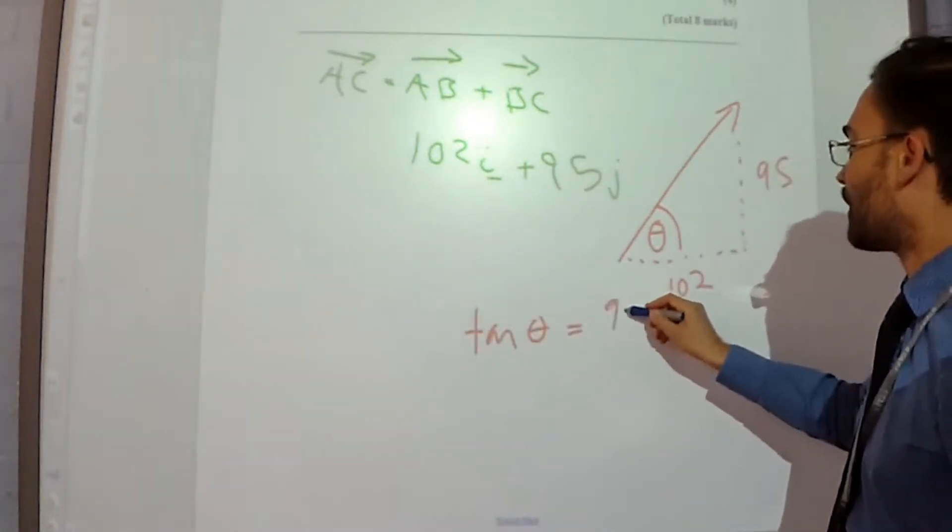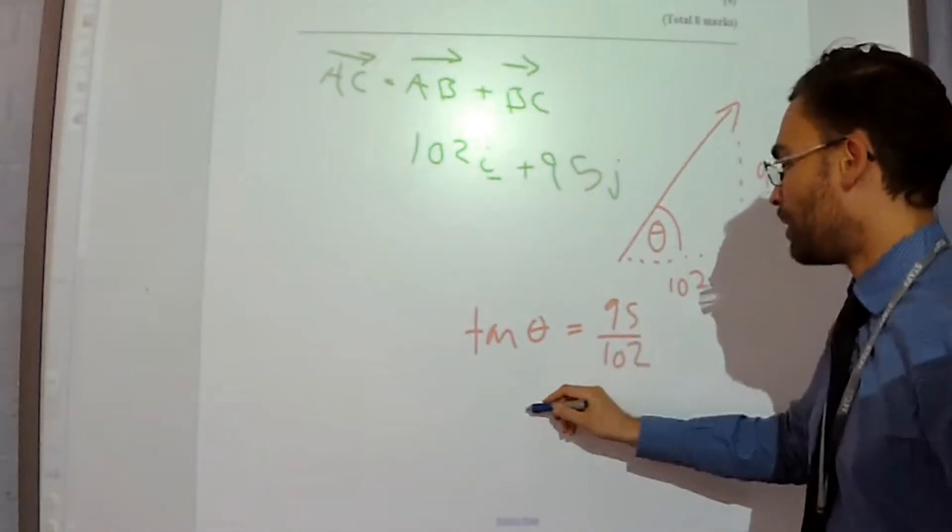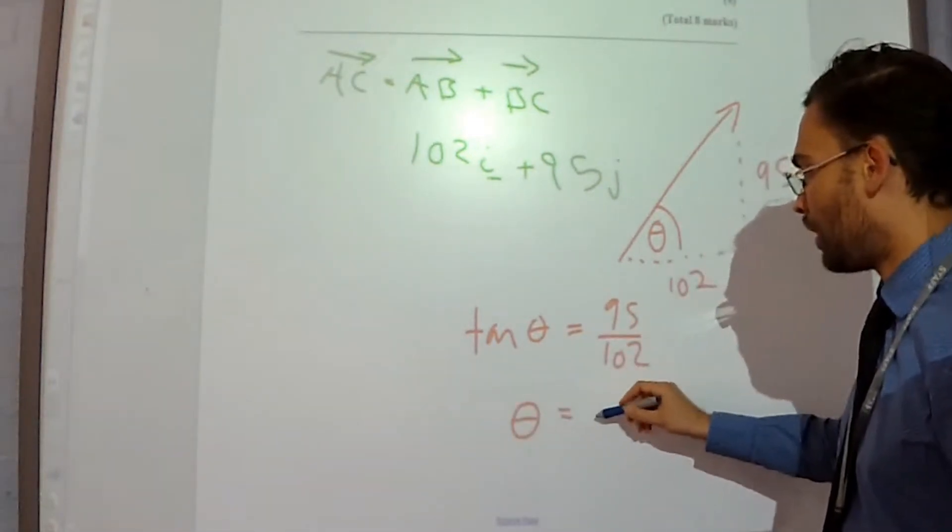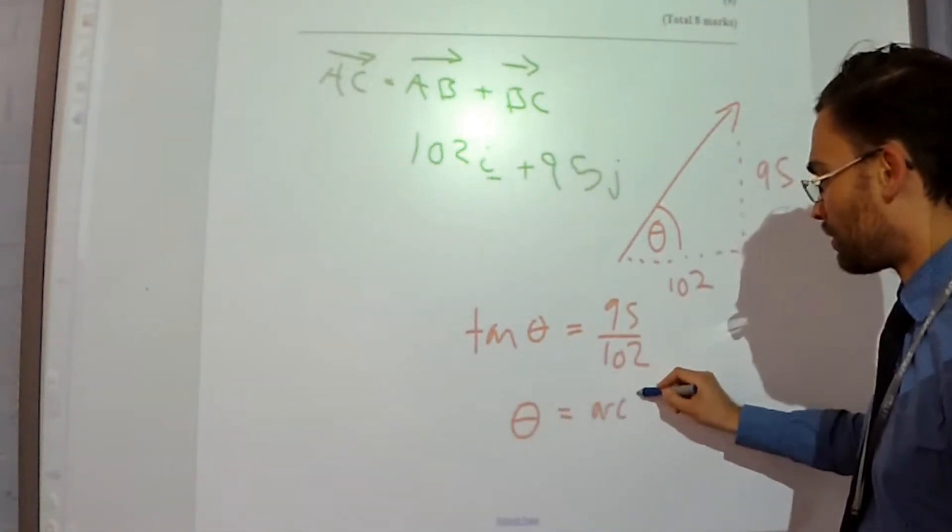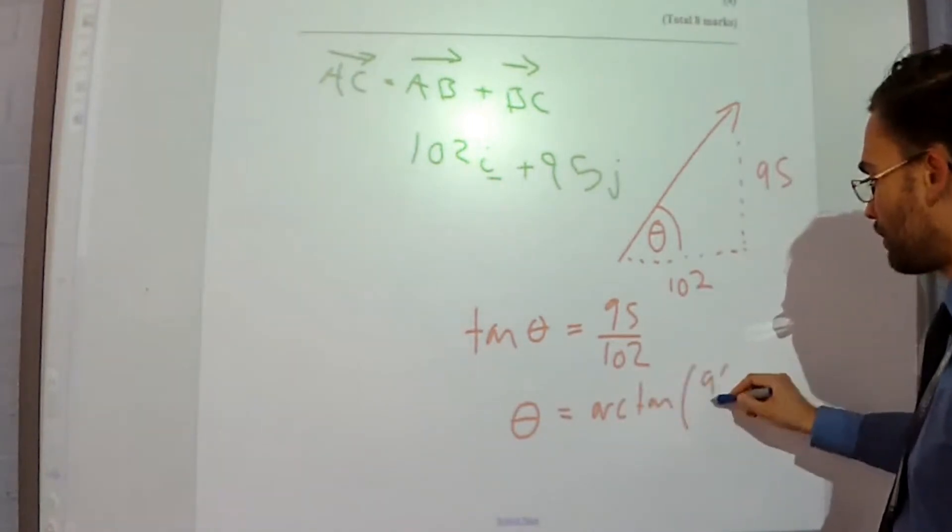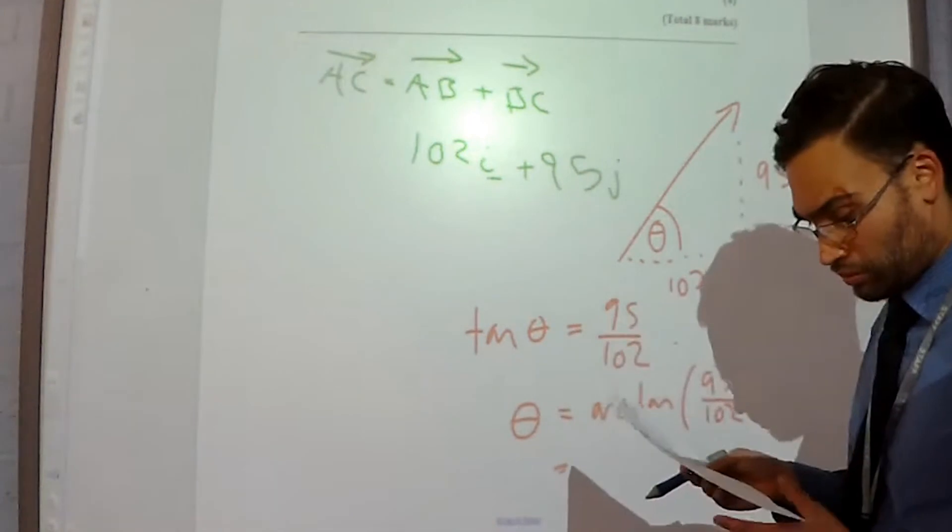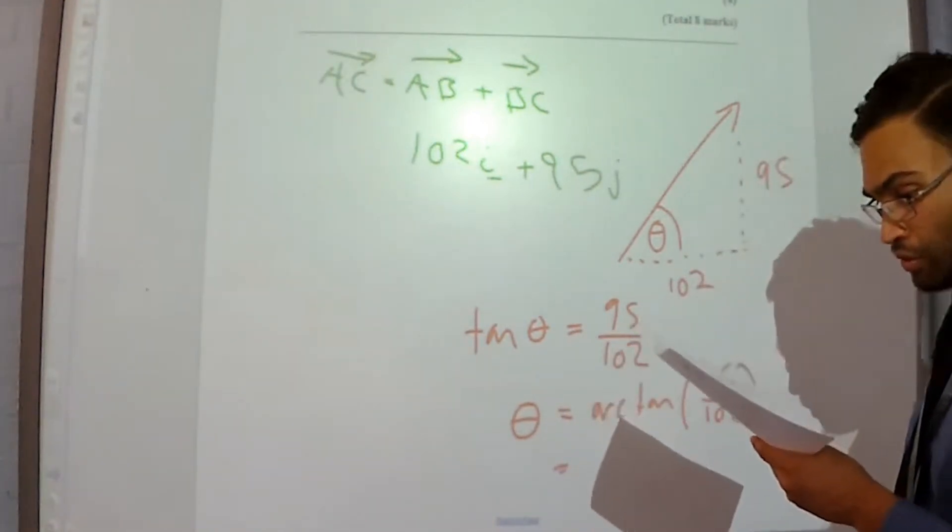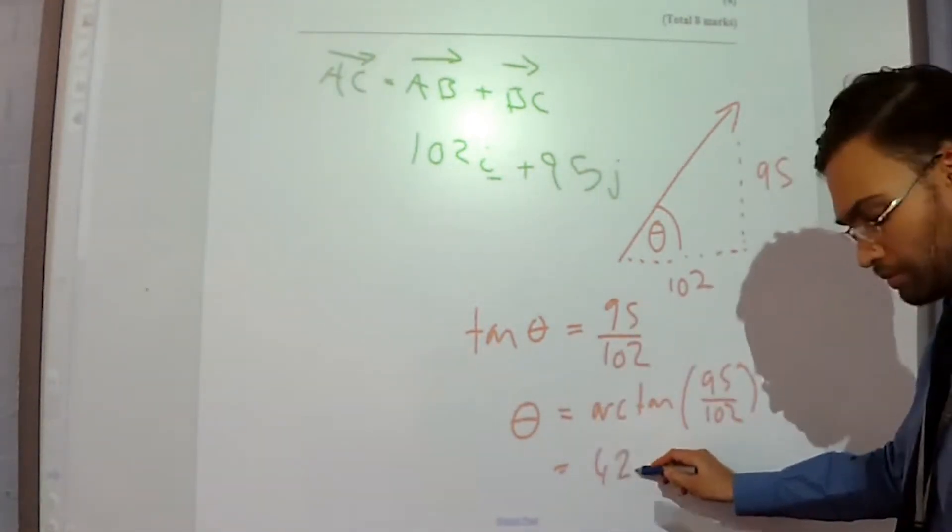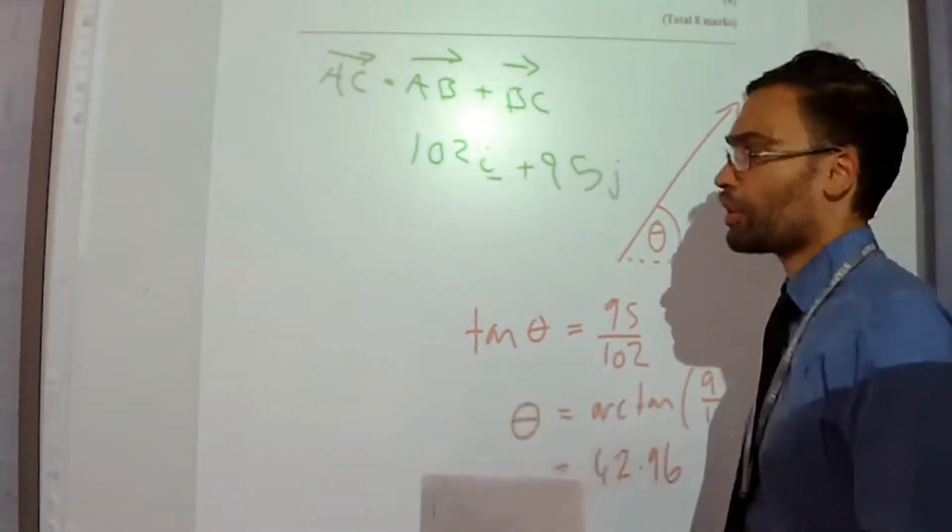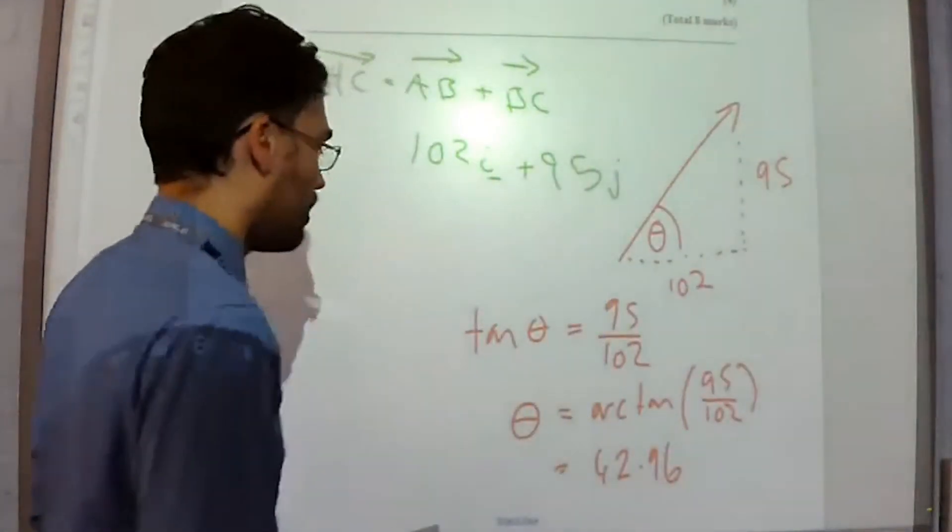So tan theta equals 95 over 102. So if we do arc tan of that, that gives you 42.96 or 43 degrees.